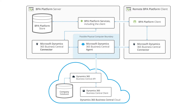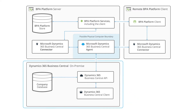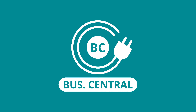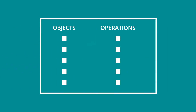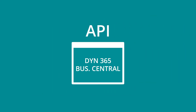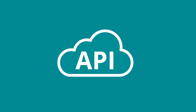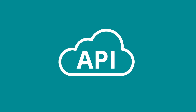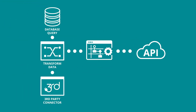Whether Dynamics 365 Business Central has been deployed in the cloud or on-premise, you can choose to locate the agent on any machine accessible by the BPA Platform server or on the server itself. All communication uses XML and the connector can be used to map BPA Platform data to Dynamics 365 Business Central objects and operations. XML responses received back from the Dynamics 365 Business Central API can be saved and used by other BPA Platform tools for further processing.